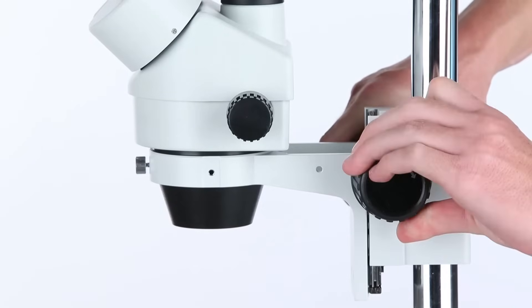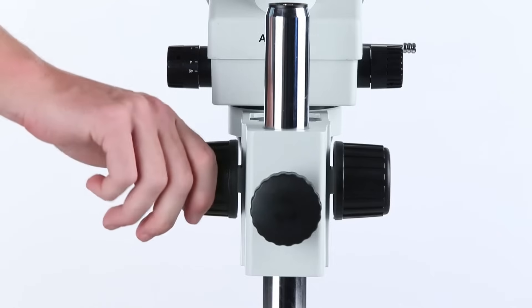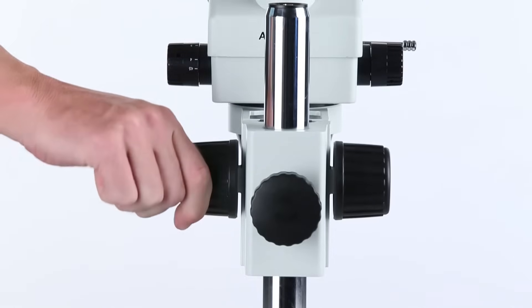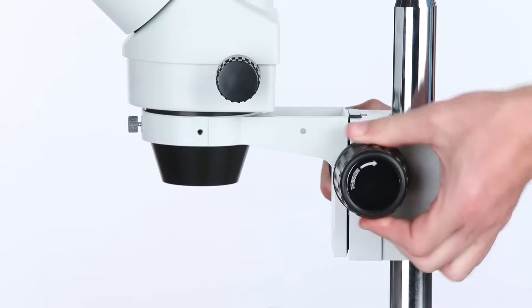turn the tension knob clockwise to increase the tension, counterclockwise to decrease the tension.